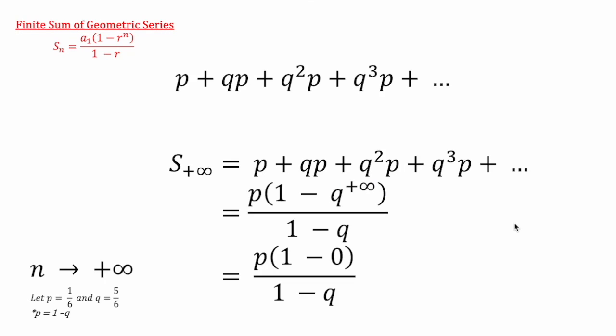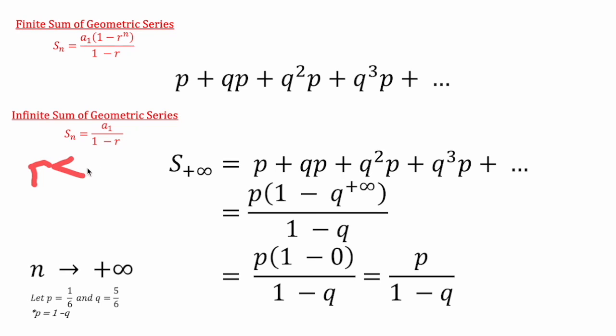So what do we have next? We get P times 1 minus 0 over 1 minus Q, which gives us P over 1 minus Q, which so happens to be the formula for an infinite sum of a geometric series given, and I didn't add this in, given that R is less than 1, right? So we make sure that the term, that this term here, this gets smaller, and smaller, and smaller, and then it goes to 0, and then this just reduces down to this.